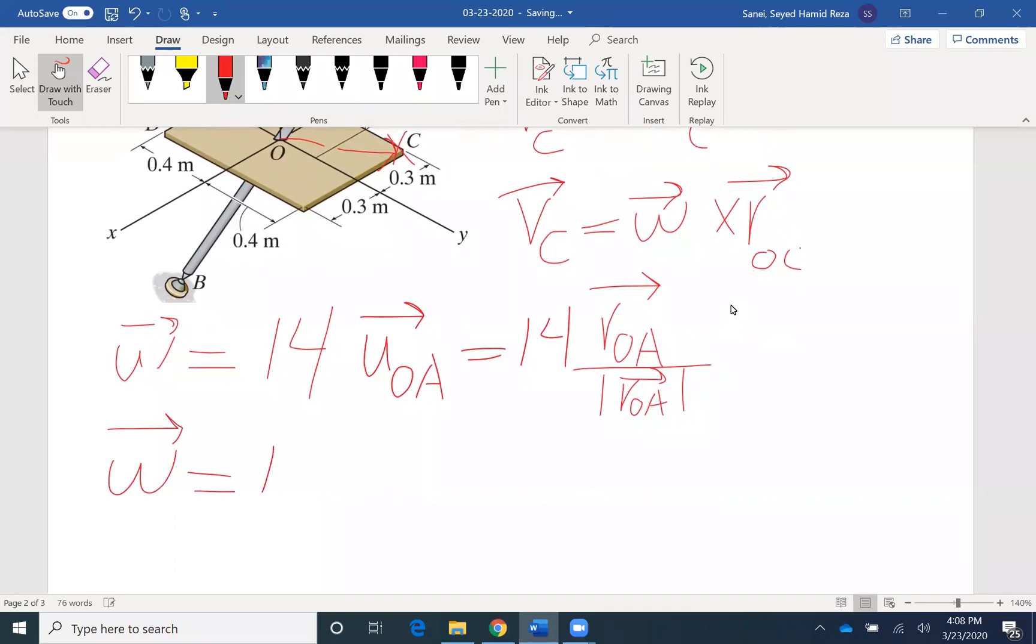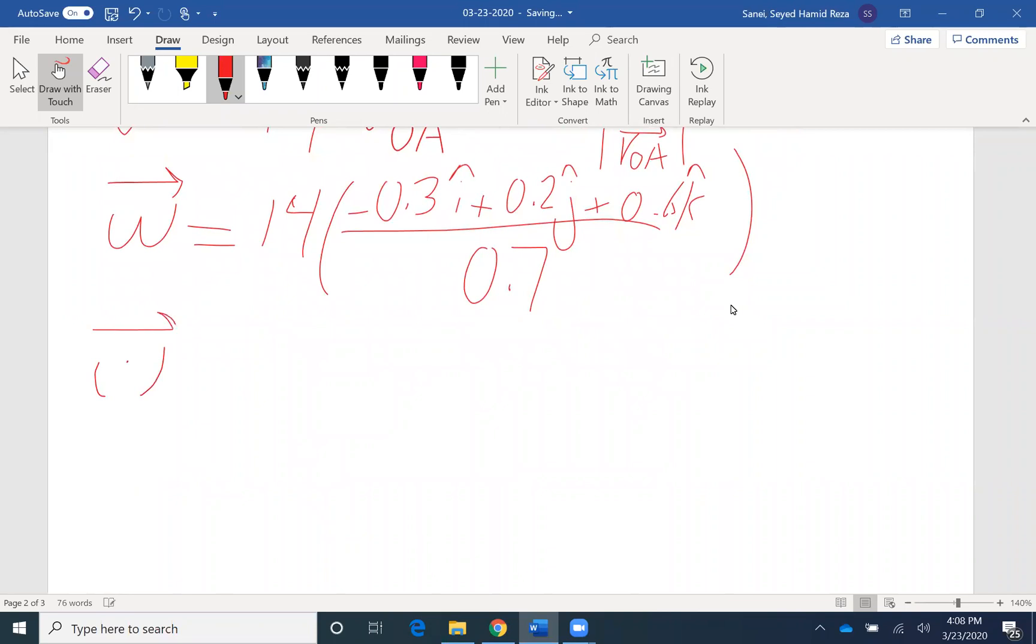So we can find omega equals 14 times ROA. ROA is negative 0.3i, we are moving 0.2j in the direction of positive y, and from O to A we are moving 0.6k to the positive z. And if you find the magnitude, it would be 0.7. So I can write omega. Let me write it here, omega to be negative 6i plus 4j plus 12k. I found omega in vector form.